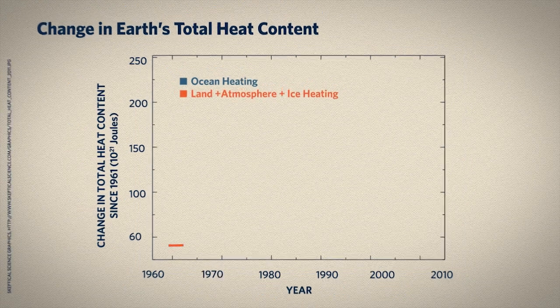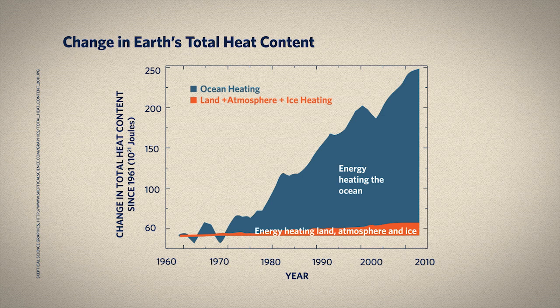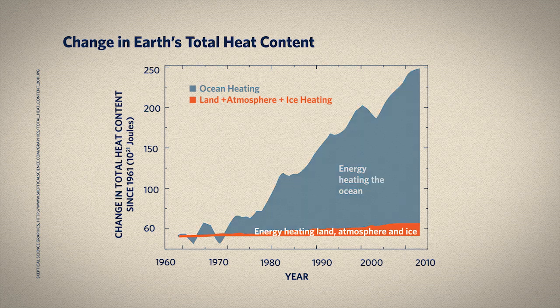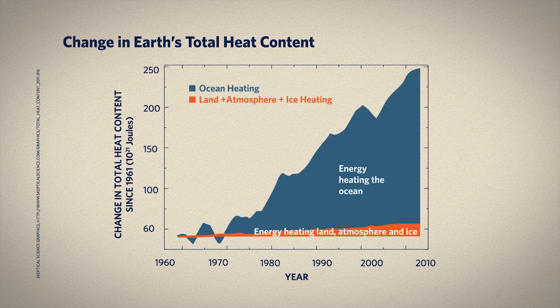On Earth, where has the extra energy been going? Well, a lot of it has been going into the oceans. Here's one estimate of that. On the horizontal axis, we're looking at time starting in the 1960s. And on the vertical axis, we're looking at the change in total heat content since 1961. The units on that vertical axis are 10 to the 21st joules. Over this time period, a small portion of the extra energy has gone toward heating land surfaces, the atmosphere, and ice. But a much larger amount has gone toward heating the ocean.